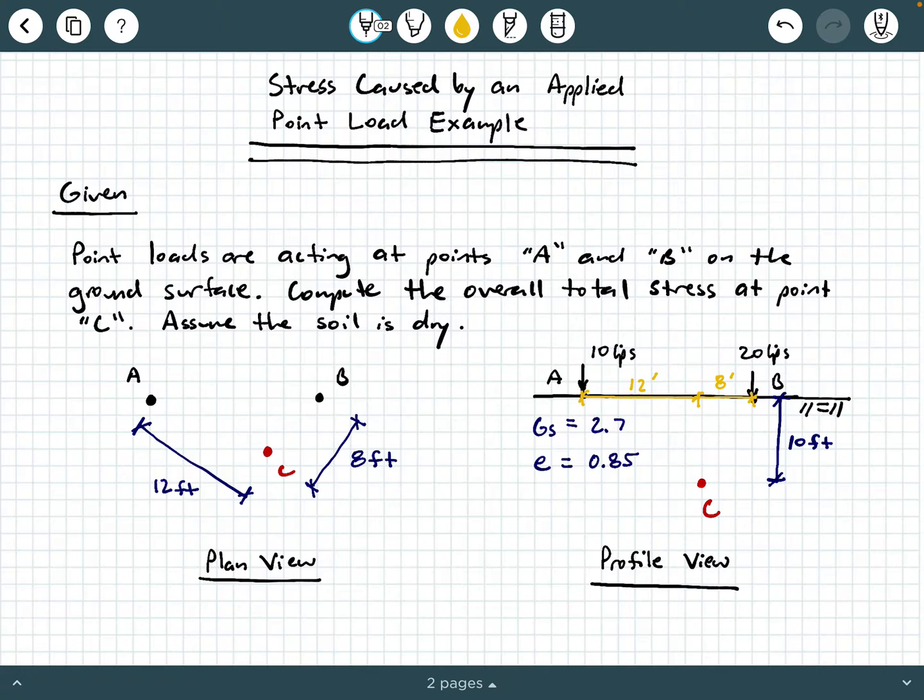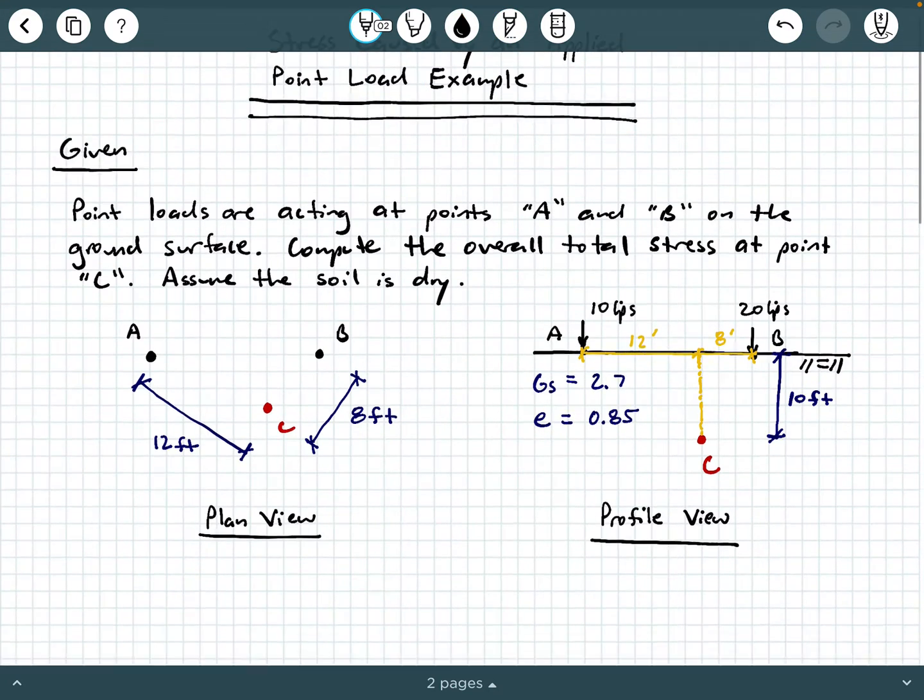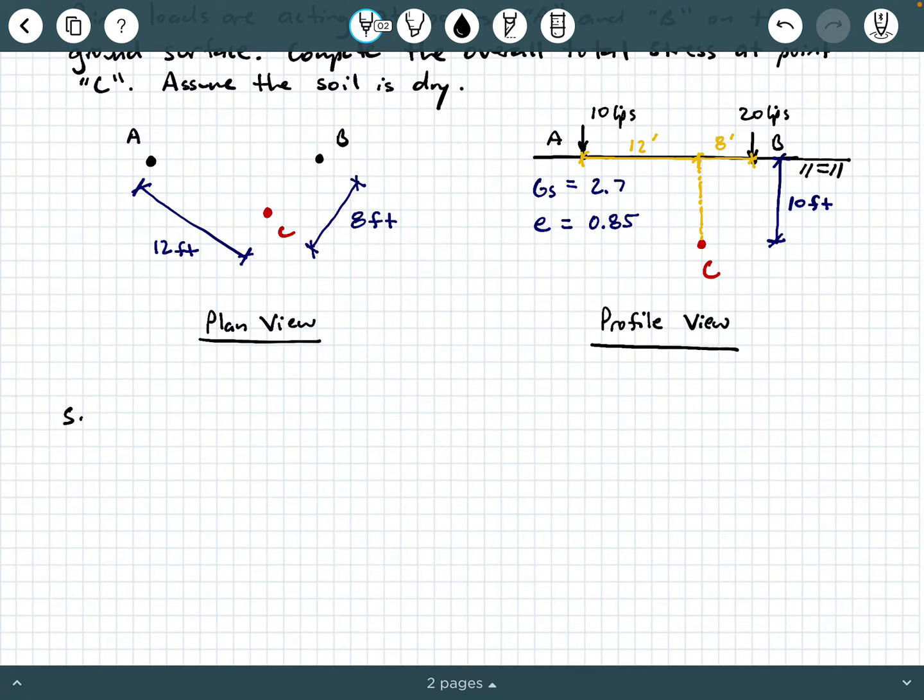Now the depth below the ground surface is 10 feet. So again, those 12 and 8 feet are on the ground surface. And then the depth below the ground surface of the point that we're really interested in, point C, is 10 feet below the ground surface. We were also given some soil property information. So the soil specific gravity is 2.7 and the void ratio is 0.85. So now that we can visualize what's going on, let's go ahead and tackle the solution.